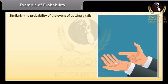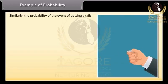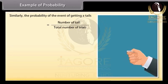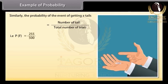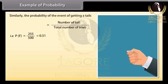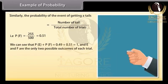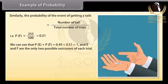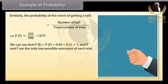Similarly, the probability of the event of getting a tail is equal to number of trials upon total number of trials, that is, P(E) equals 255 upon 500 equals 0.51. We can see that P(E) plus P(F) equals 0.49 plus 0.51 equals 1, and E and F are the only two possible outcomes of each trial.